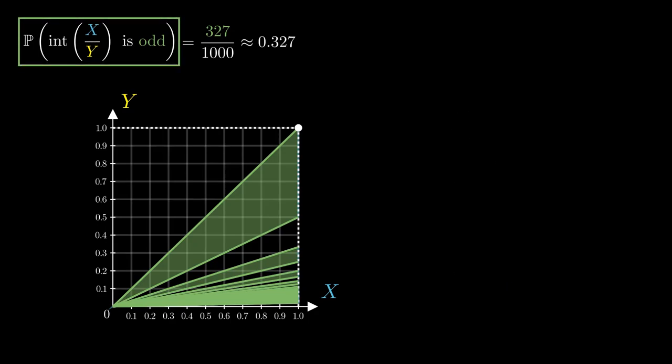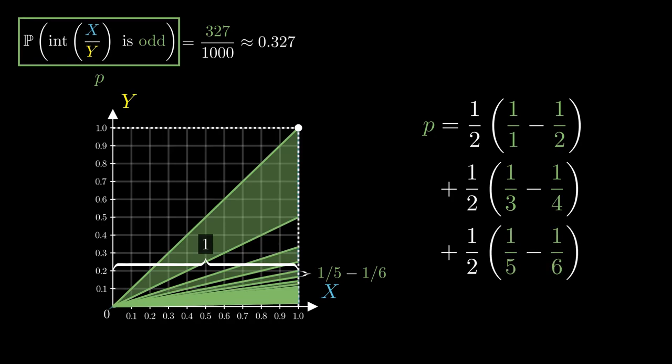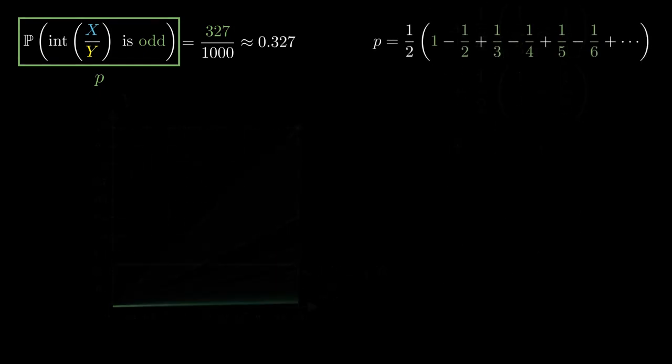Let's call this probability p, and try to ask what is its area. The first triangle has a base 1 over 1 minus 1 over 2, and height 1. Therefore the area is a half times the base times the height. In this case the height is 1, so we can just omit that. But the area of the second triangle is half times a third minus a quarter. The following triangle is a half times a fifth minus a sixth. So on and so forth, we actually get this infinite sum of fractions where the plus and minus signs alternate.